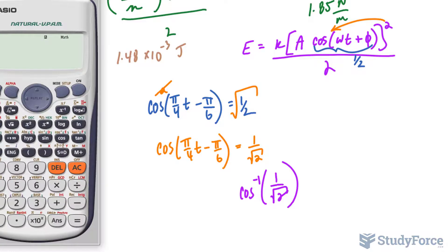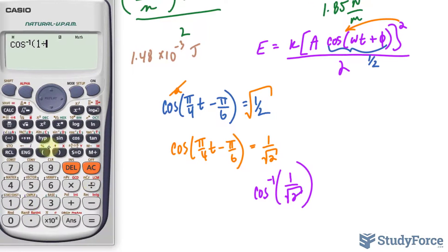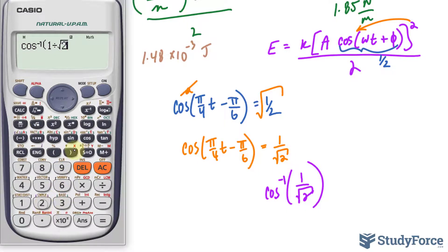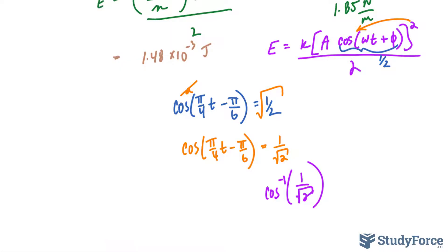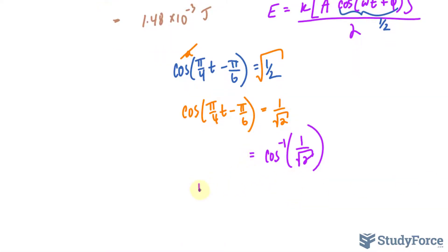Then what is the inverse of 1 over the square root of 2? You can use special triangles, but I prefer to use my calculator. Make sure that your calculator is in radians, square root of 2, and we get an angle of π/4. So I have π/4 t minus π/6 is equal to π/4.